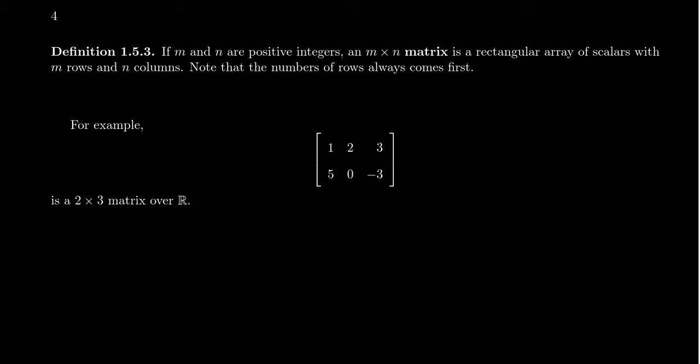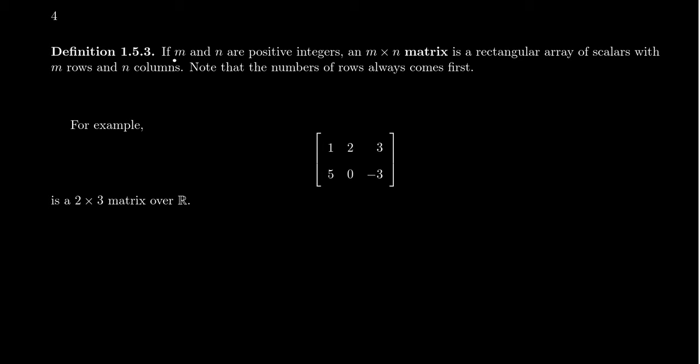For this reason we're going to introduce the augmented matrix. What is a matrix? Not talking about red pill or blue pill — a matrix is a rectangular array of numbers. If we have two positive integers m and n, we say an m by n matrix is a rectangular array with m rows and n columns.